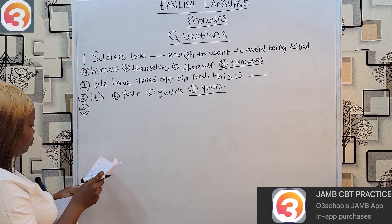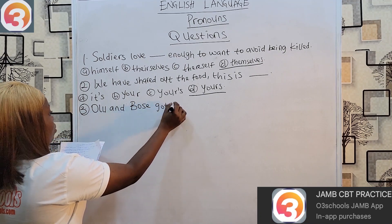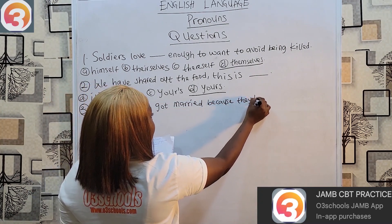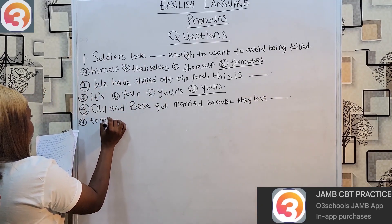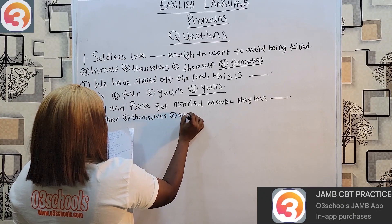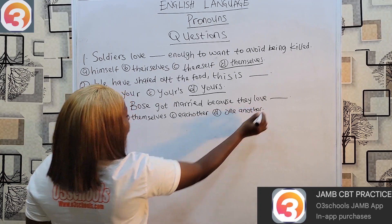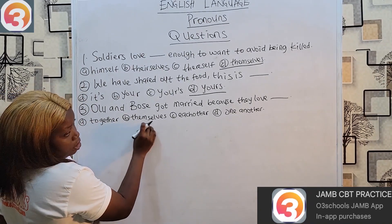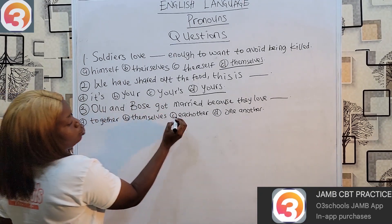Question three: 'Olu and Bose got married because they love dash.' Options include: together, themselves, each other, one another. 'Together' doesn't fit. 'Themselves' shows reflexive action, not exchange. Since Olu and Bose are two people and this shows exchange of love, we use 'each other.' One another would be for more than two people.